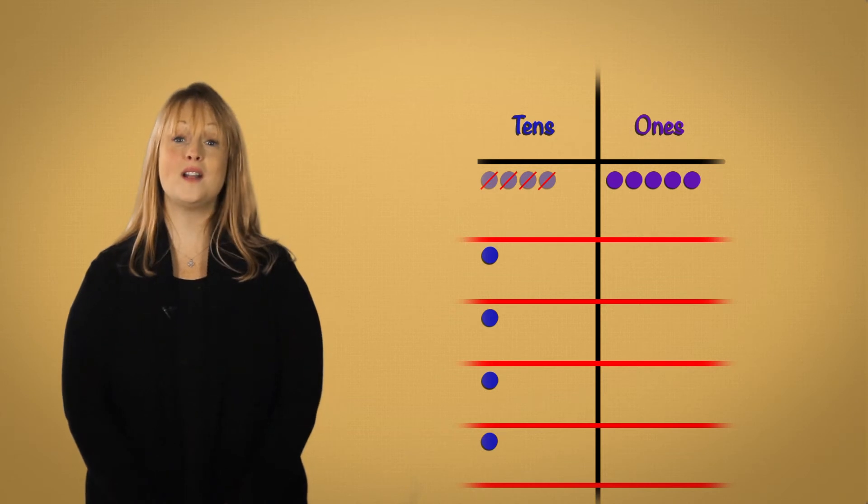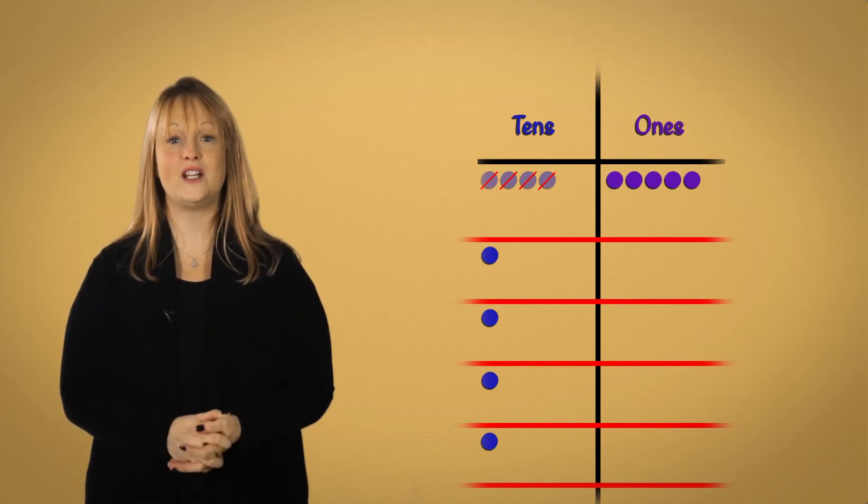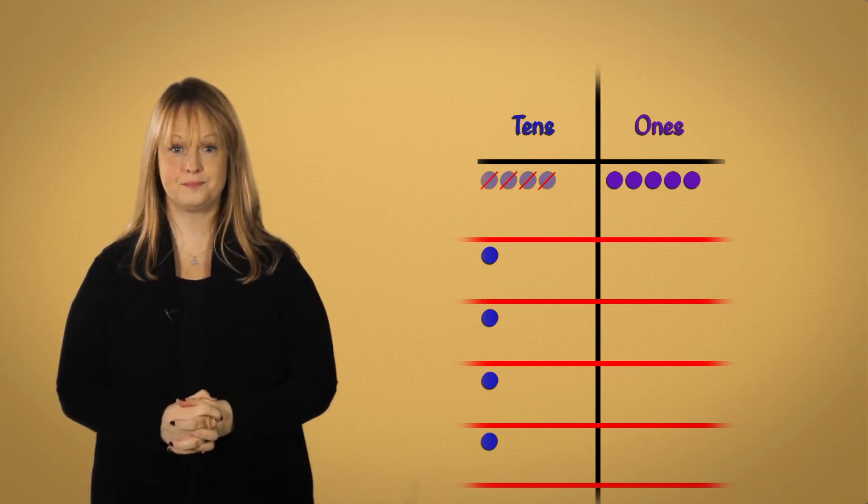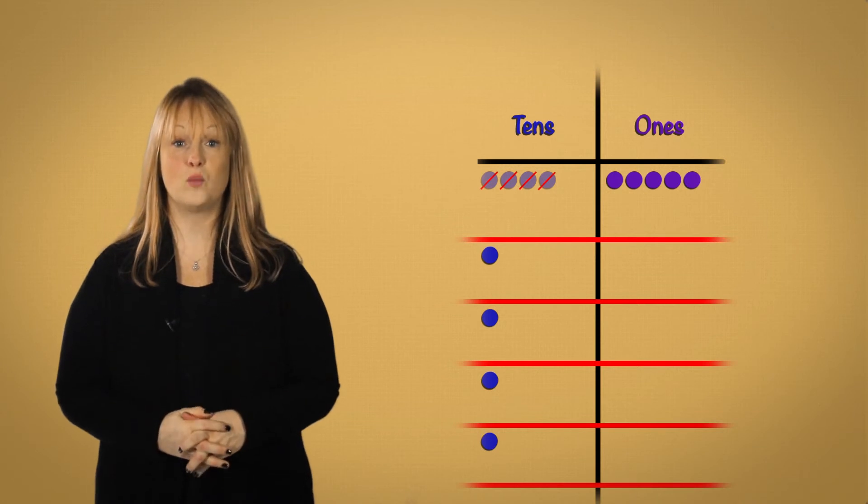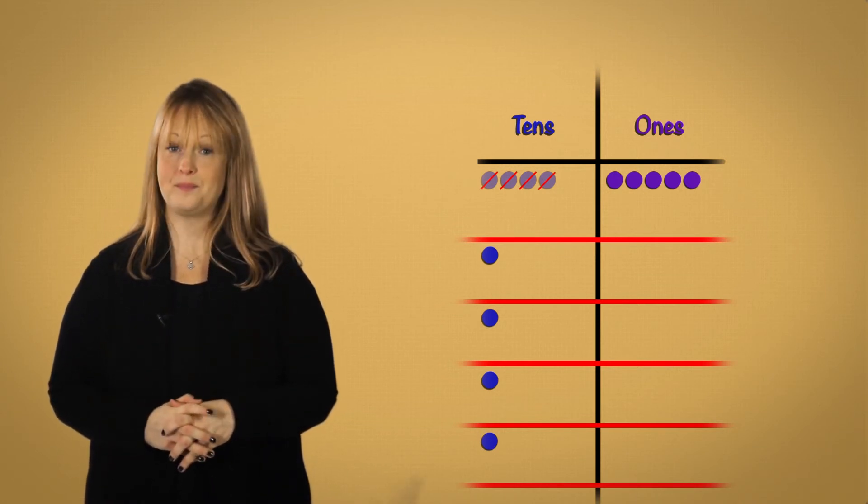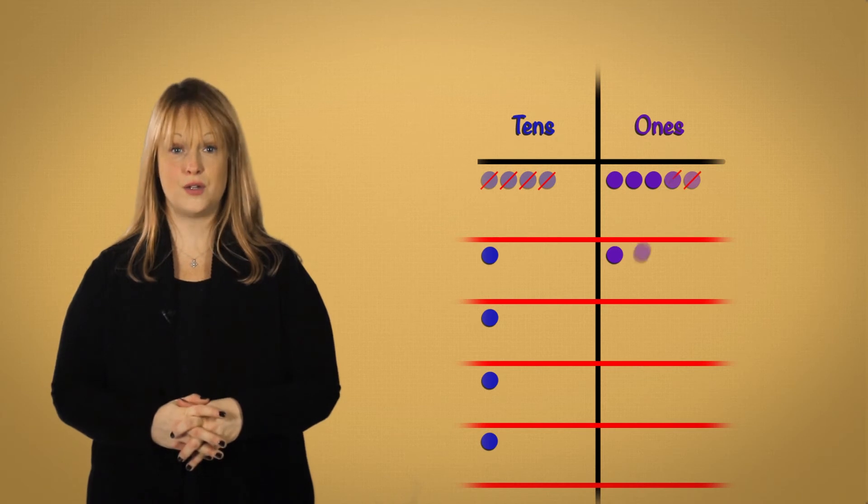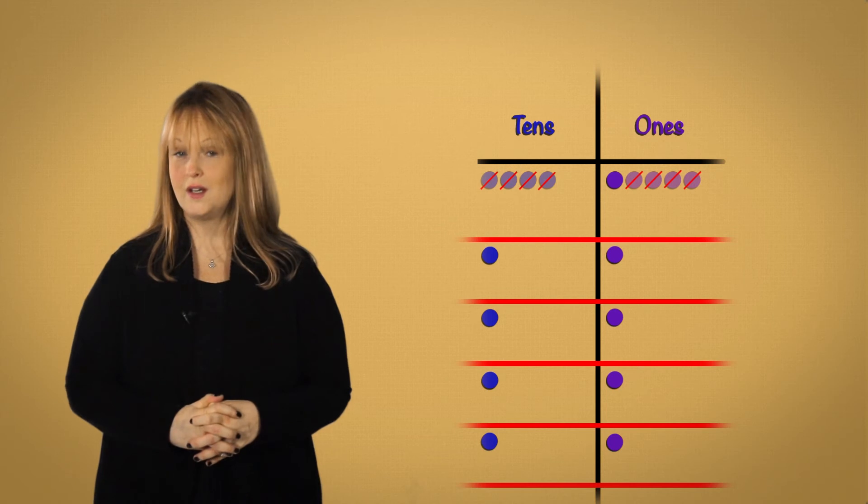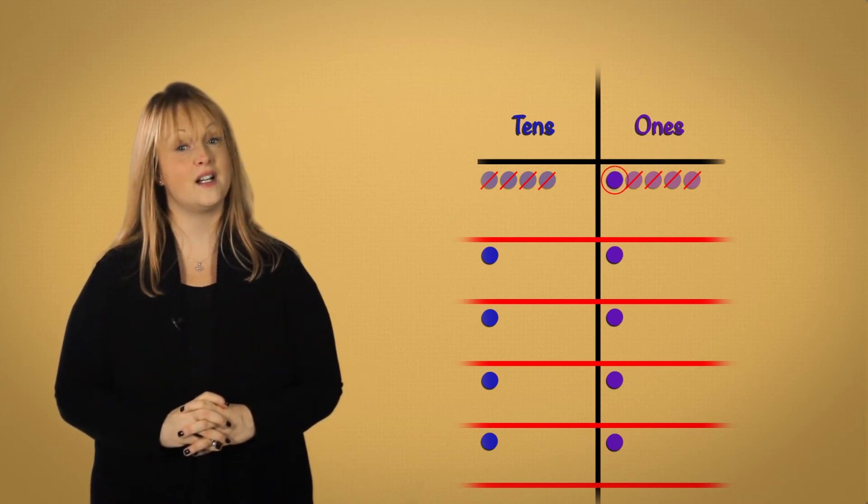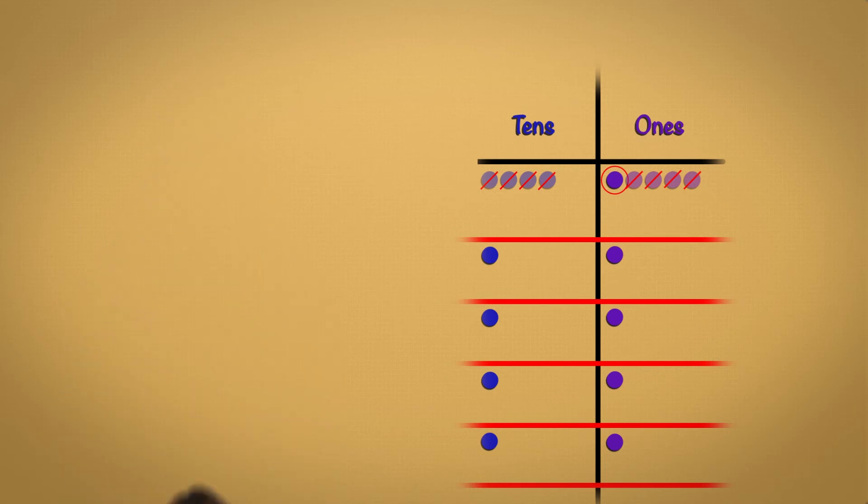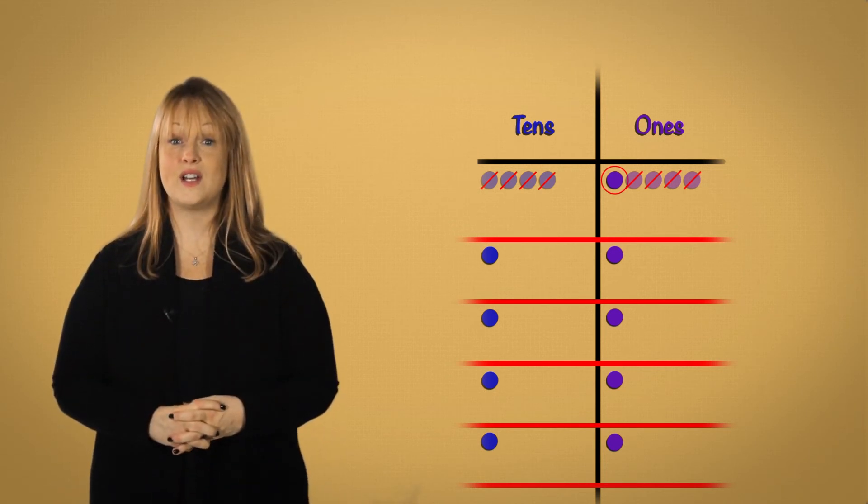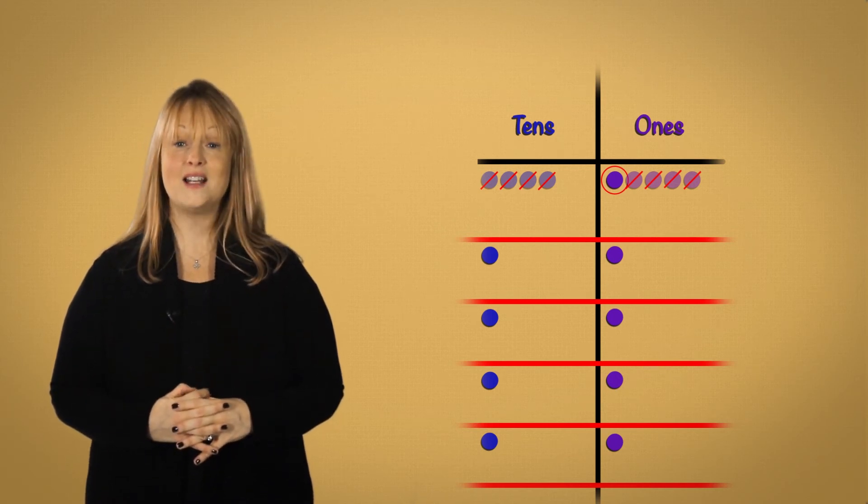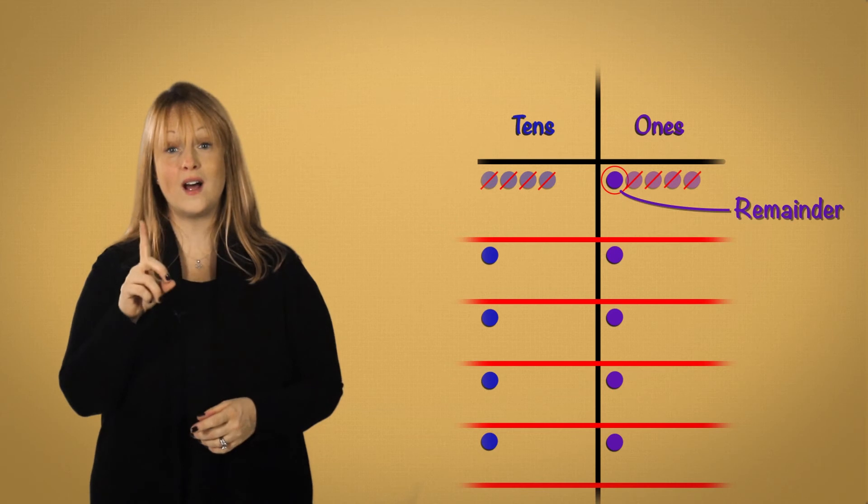Now look at the ones column. How many discs will go in each of these groups? And what is different about this column? In the ones column we distribute again, one at a time. Here's one, two, three, and four. That fills our groups once each. But look, we have one disc up here still. What does that mean? Well, since there isn't enough to share evenly, we're going to leave this here. That is our remainder. We have one left over.